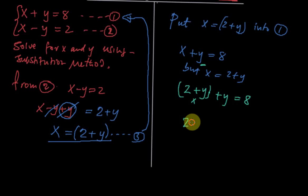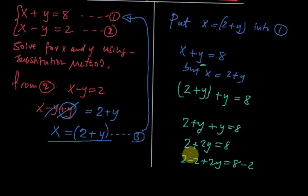So if we open the bracket, we have 2 plus y. I might remove this x now to avoid confusion. So 2 plus y plus another y equals to 8. So 2 plus 2y equals to 8. Now we subtract 2 from both sides. So 2 minus 2 plus 2y equals to 8 minus 2. Whatever I do to the left hand side, you do to the right hand side. So 2 minus 2 is zero. We have 2y equal to 6. Divide by 2, divide by 2, and you have y equal to 3.